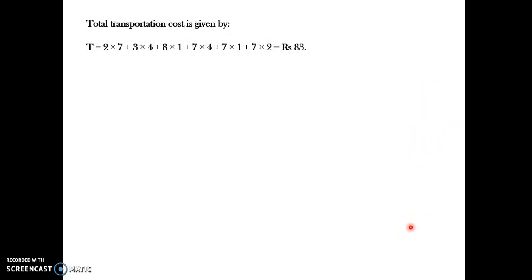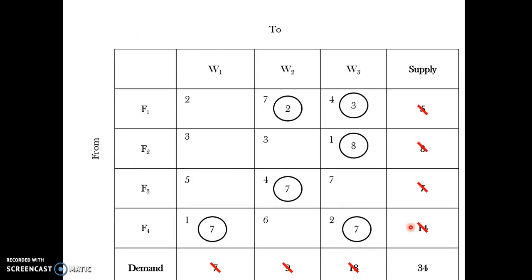With all supply and demand fulfilled, the total transportation cost comes out to 83 rupees. The calculation is: 7×2 + 4×3 + 1×8 + 4×7 + 1×7 + 2×7 = 83. You can pause and note this down. Thank you very much.